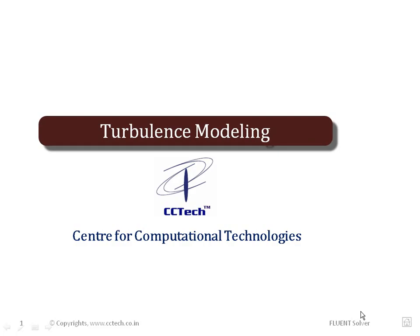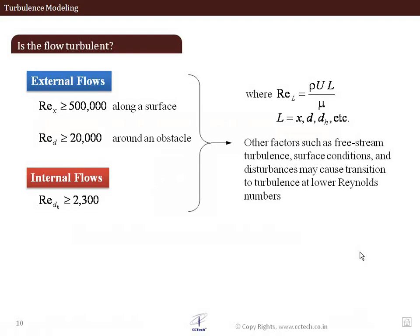Hello and welcome to this session on turbulence modeling. Let's ask ourselves when is the flow turbulent? The flow being turbulent is characterized by certain questions that we try to answer. We try to see first of all whether the Reynolds number is beyond a specific value. For internal flows, the value of around 2,300 is when we say that the flow is becoming turbulent, although this number may vary from problem to problem.